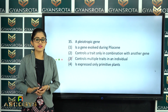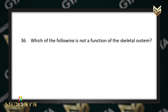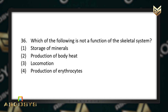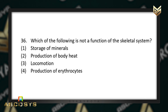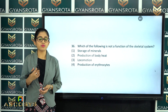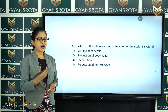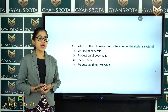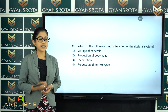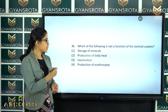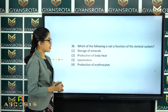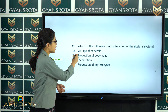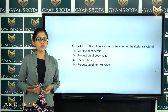The next question is question number 36. Which one of the following is not a function of the skeletal system? Storage of minerals, production of body heat, locomotion, or production of erythrocytes? This is from the chapter Locomotion and Movements. The skeletal system functions include storage of minerals, locomotion, and production of erythrocytes (red blood cells) from bone marrow. Option number 2 — production of body heat — is not a function of the skeletal system and is the correct answer.